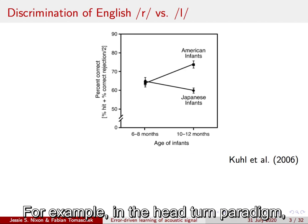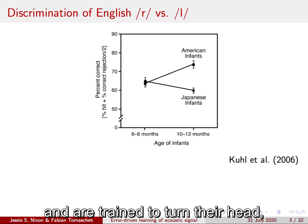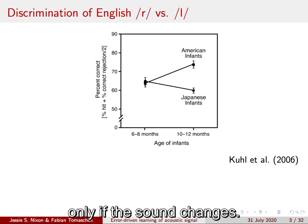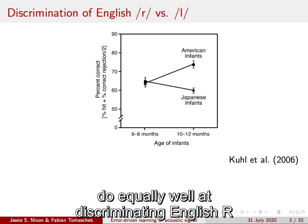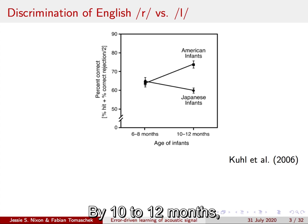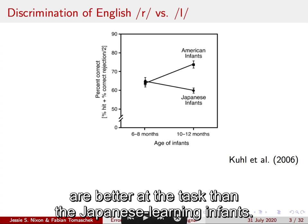For example, in the head-turn paradigm, infants hear a series of sounds and are trained to turn their head only if the sound changes. At six to eight months of age, English learning and Japanese learning infants do equally well at discriminating English R and L in this task. But by 10 to 12 months, the English learning infants are better at the task than the Japanese learning infants.